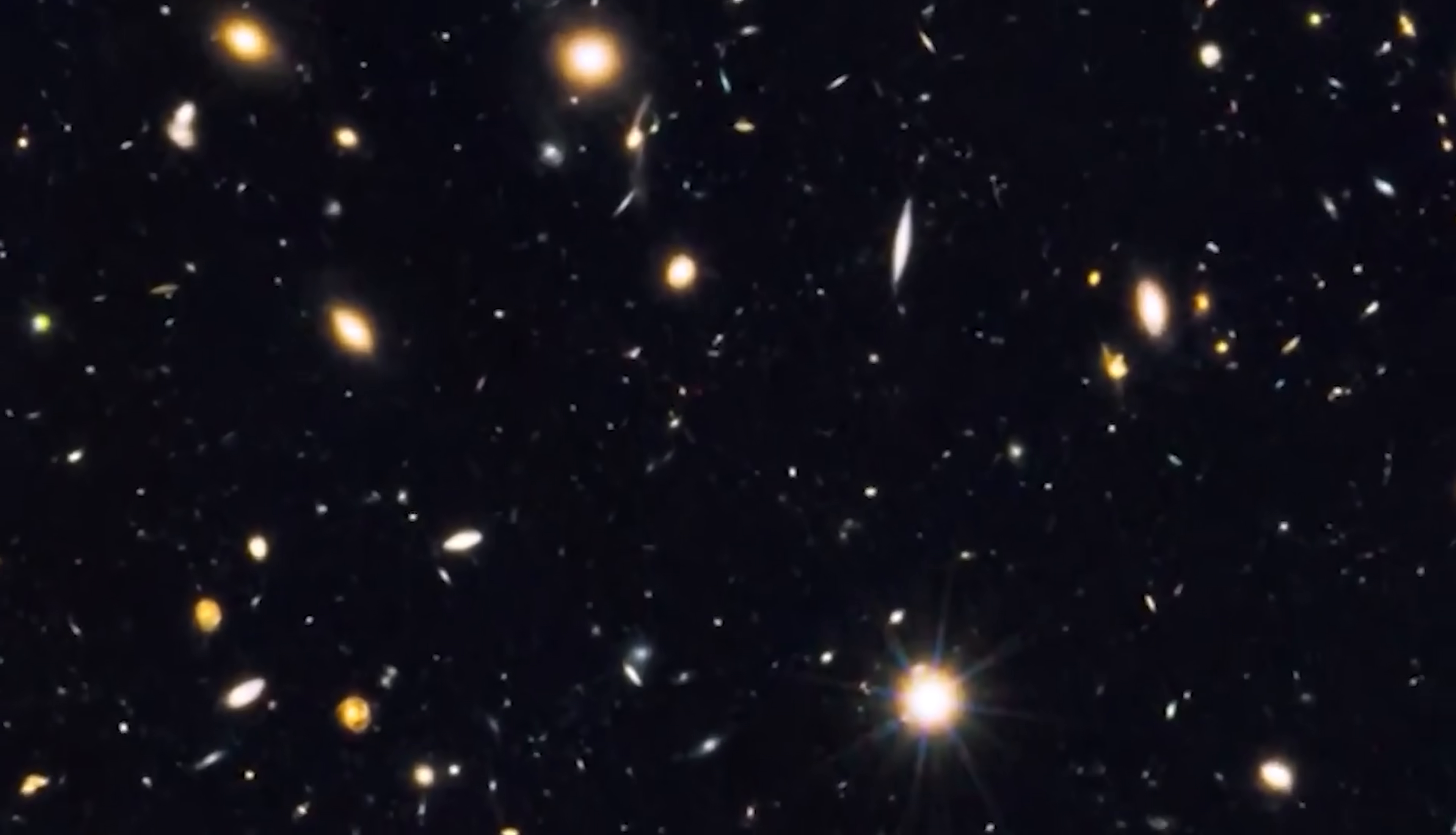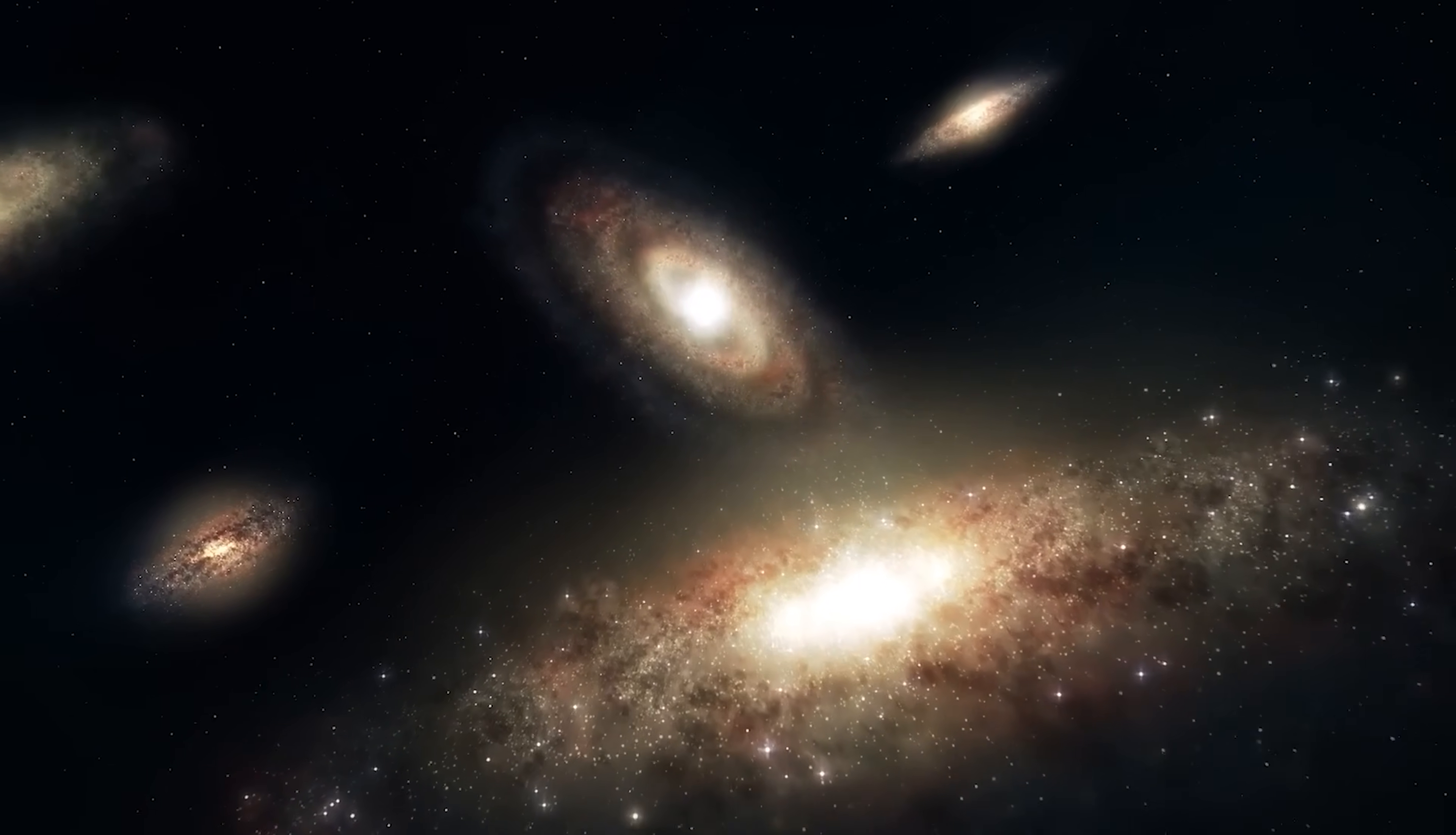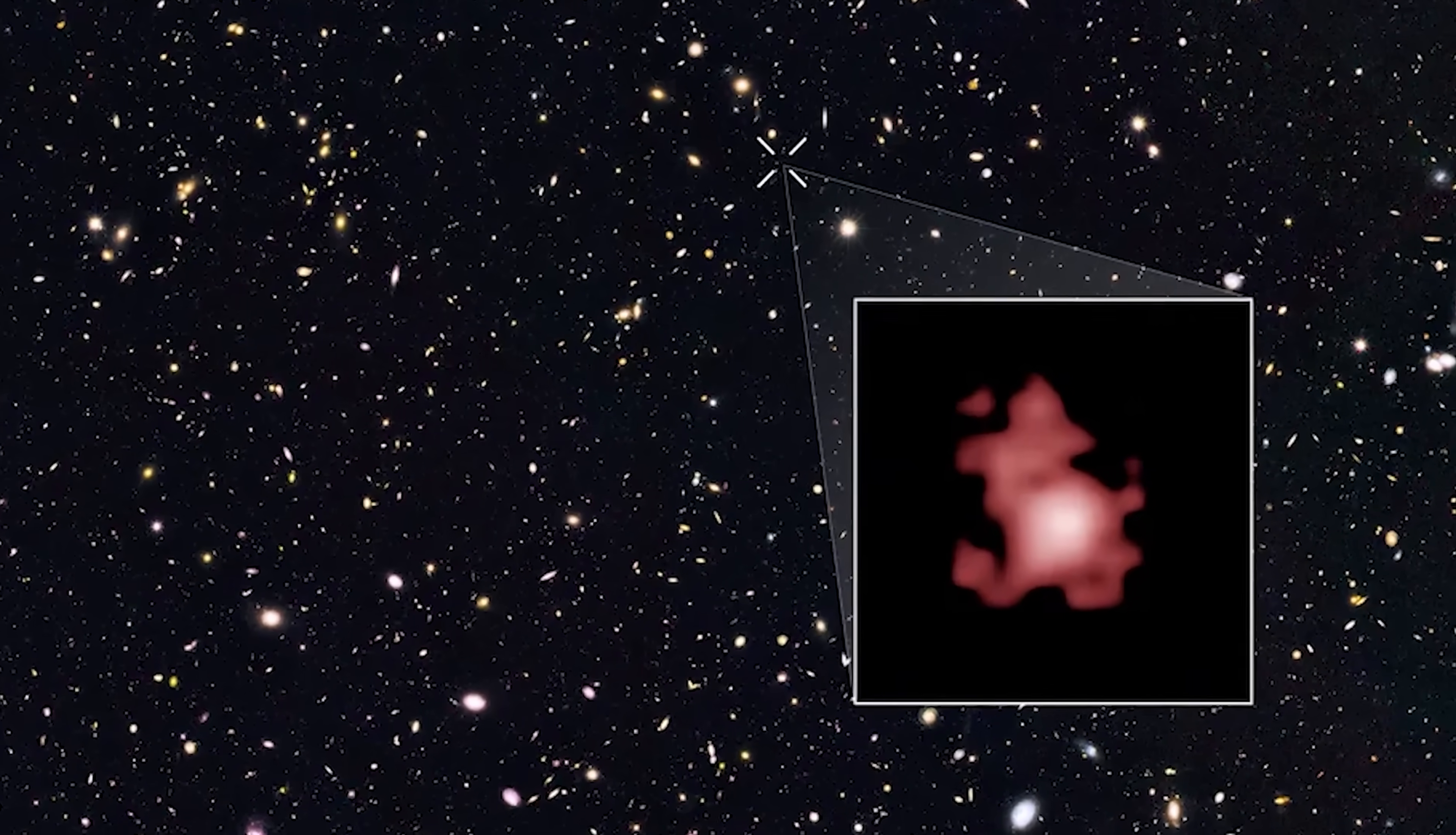Instead, researchers are finding large, complex galaxies, complete with familiar shapes and structures. If confirmed, this suggests that galaxies as mature as those we see today were already commonplace just a few hundred million years after the Big Bang. And Webb has only sampled a tiny patch of sky.